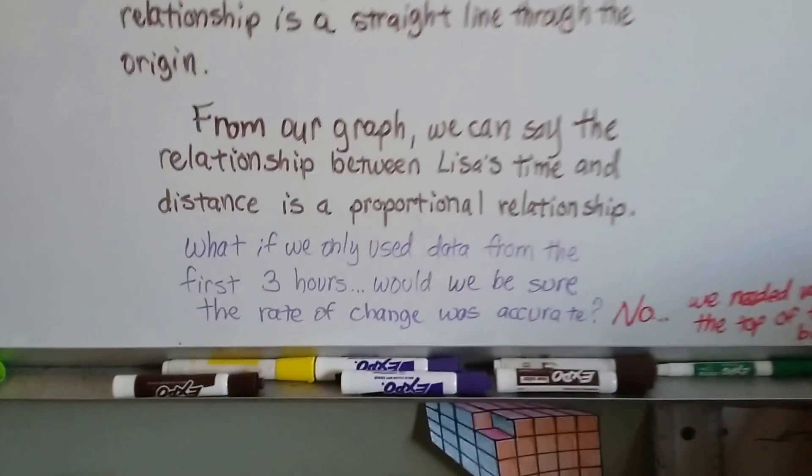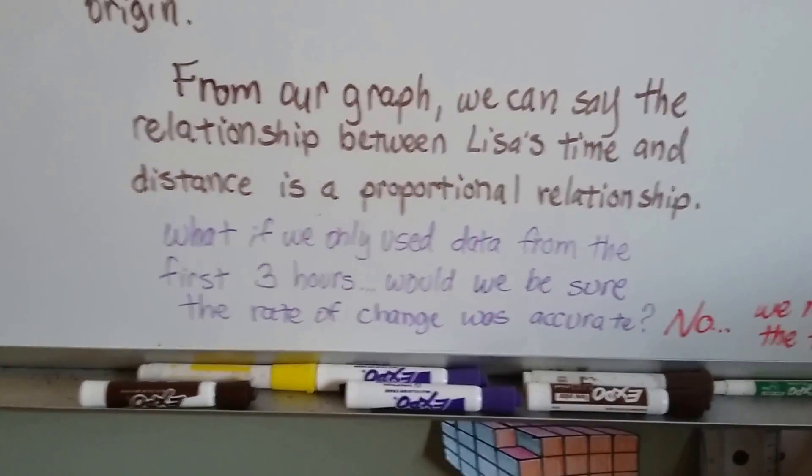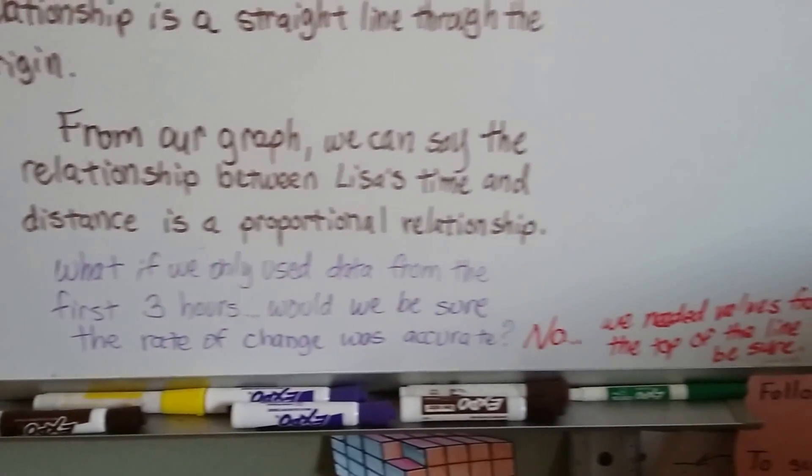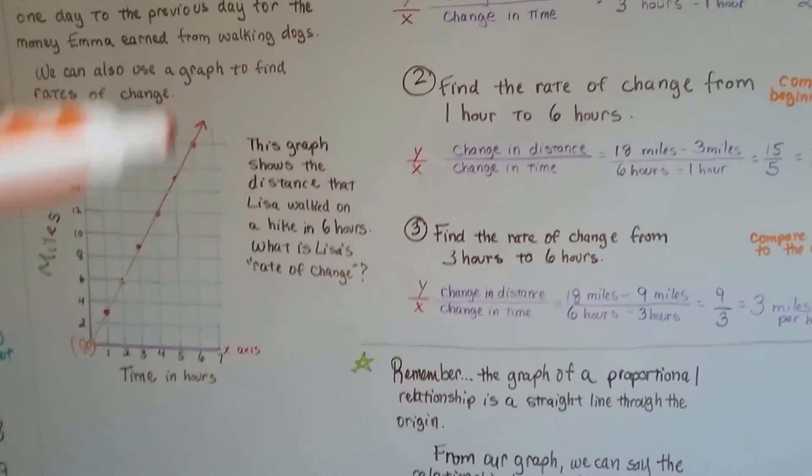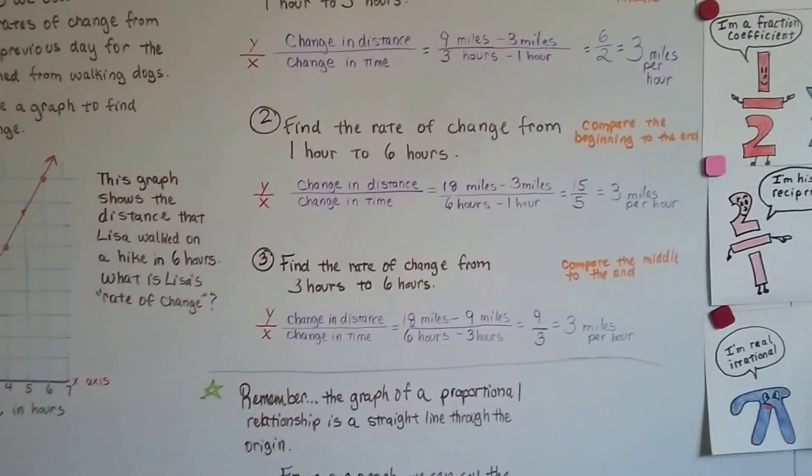Now, what if we only used data from the first three hours? Would we be sure the rate of change was accurate all the way through the six-hour hike? No. We needed values from the top of the line to be sure. We needed to compare to the end of her hike to be absolutely sure that there was a constant rate of change.